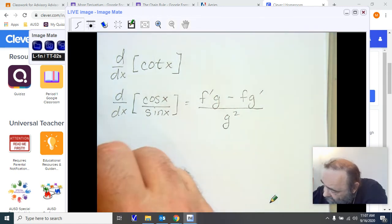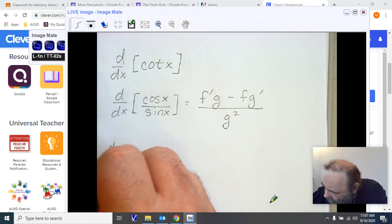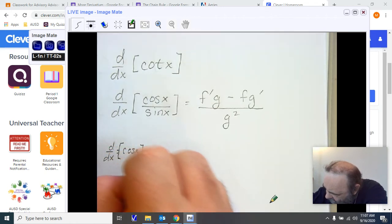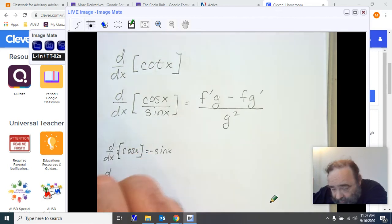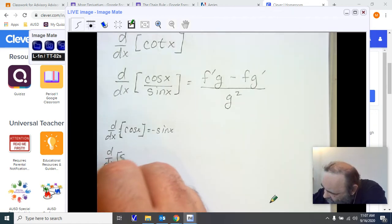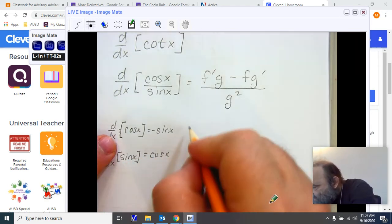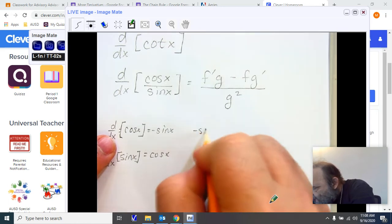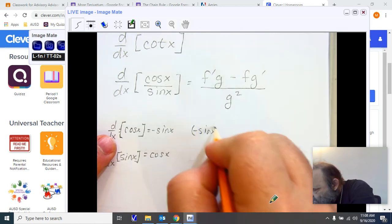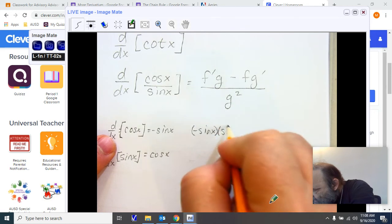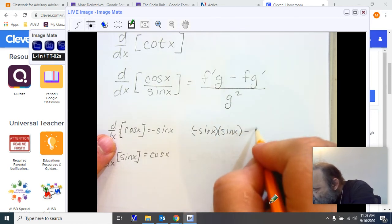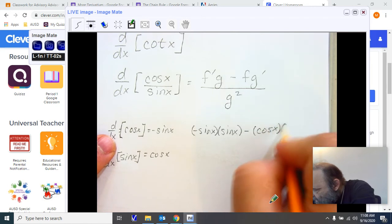We also have already seen that the derivative d/dx of the cosine of x is negative sine x. And the derivative d/dx of the sine of x is cosine x. Now we're going to do our direct substitution again. Negative sine x times sine x minus cosine x times cosine x all over sine squared x.